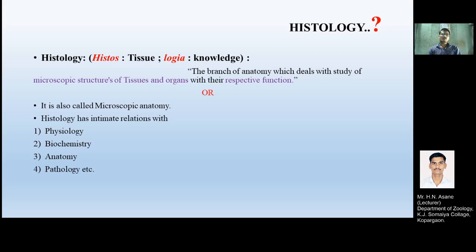What is histology? Histology comes from the Greek words: 'histos' means tissue, and 'logia' means knowledge. So histology means taking knowledge of the tissue. It is defined as the branch of anatomy which deals with the study of microscopic structures of tissues and organs with their respective functions.